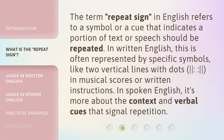The term 'repeat sign' in English refers to a symbol or a cue that indicates a portion of text or speech should be repeated. In written English, this is often represented by specific symbols, like two vertical lines with dots, in musical scores or written instructions. In spoken English, it's more about the context and verbal cues that signal repetition.